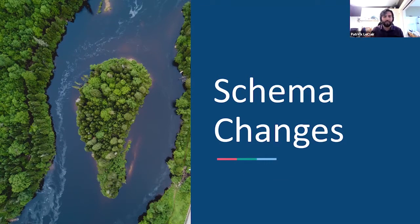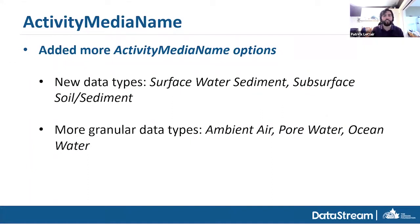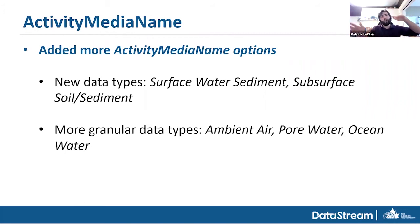Now I'll get into what these changes actually look like. Starting with schema changes — changes to allowed values and required columns. First is activity media name, which is where the new data types come in. Before, you could only put surface water into DataStream. We heard from a lot of people that they really wanted sediment data — people collecting it jointly while doing surface water sampling. So we added surface water sediment, for samples taken from the top layer of the bottom of a lake, river, or pond. The other new type is subsurface soil — for soil cores where you do soil analysis.